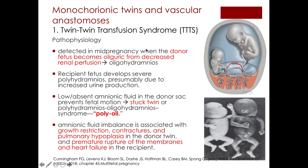TTTS is usually detected in mid-pregnancy when the donor fetus becomes oliguric because of decreased renal perfusion, resulting in oligohydramnios in the donor twin. The recipient fetus develops severe polyhydramnios, presumably because of increased urine production. The low or absent amniotic fluid in the donor sac prevents fetal motion — this is why it is called the stuck twin. TTTS is also known as polyhydramnios-oligohydramnios syndrome or polyoli.